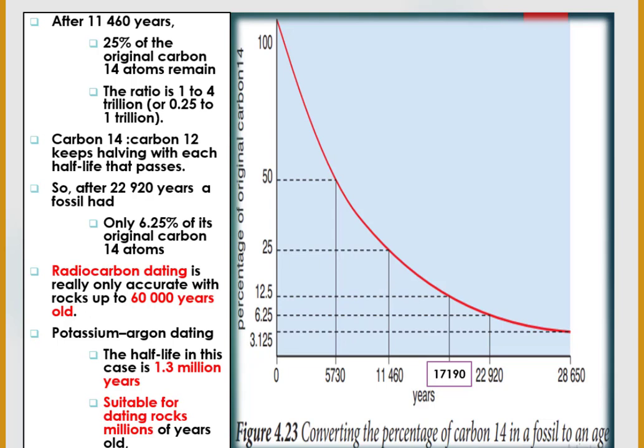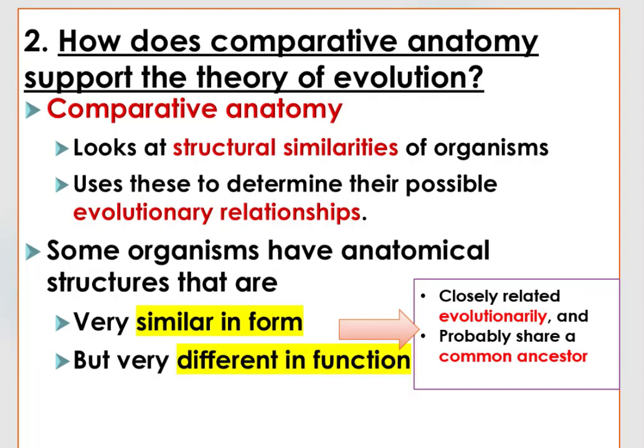Because carbon-14 atoms can be completely decayed, it no longer helps us determine the age of fossils older than 60,000 years. In this case, we must use other radioactive substances with longer half-lives, like potassium-argon, which has a 1.3 billion year half-life and is suitable for dating rocks millions of years old.